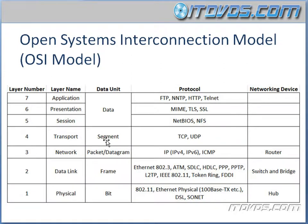The transport layer actually segments the data into data streams as it goes down the OSI model, and then when it goes up the OSI model, it actually reassembles those segments to hand them to the session layer. This layer can also establish a logical connection between the sending host and the destination host, and we're going to talk about how that works much more when we talk about TCP.